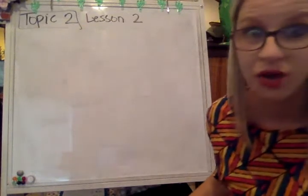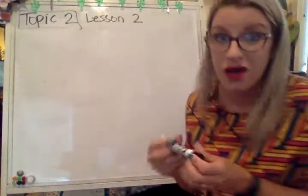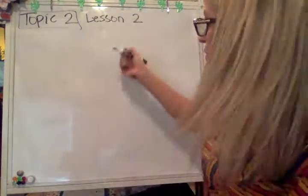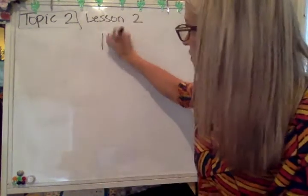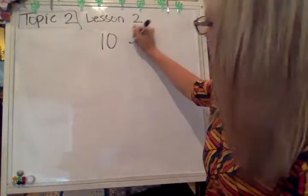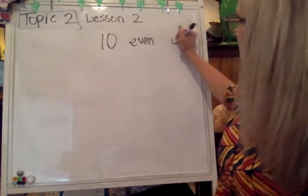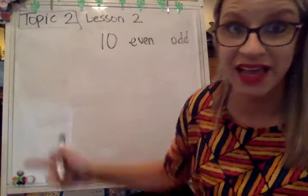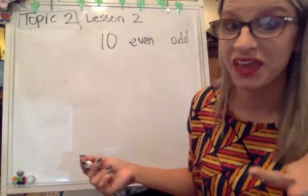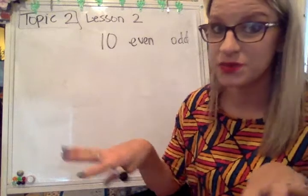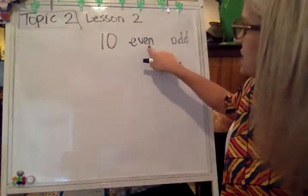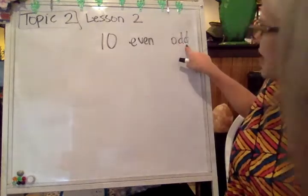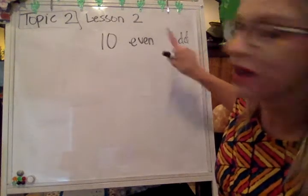We've got to show, which means we're going to be making a model. Let's pretend that we're trying to decide if the number 10 is even or if it is odd. If I had the number 10, I'm trying to decide if I could put that into equal groups. If it was in equal groups, that would mean that it was even. If I had one that was left over, that would signify that it was odd.